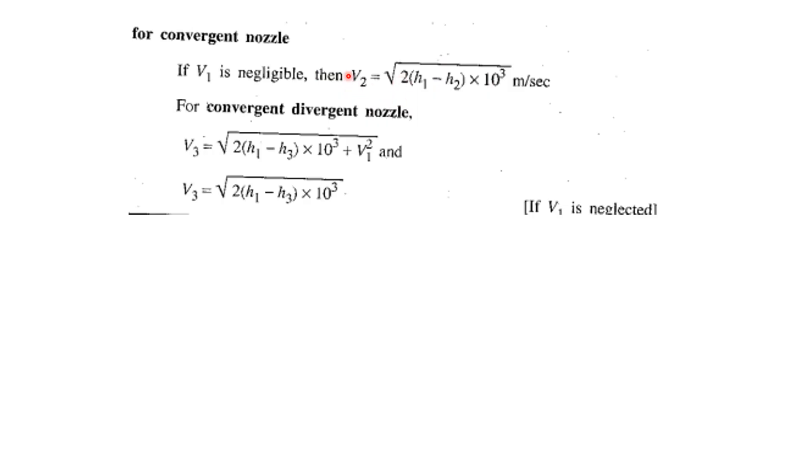For convergent divergent nozzle, we have three sections. Section three is the exit of the nozzle, so the velocity of steam at the exit will be V₃ = √(2(h₁ - h₃) × 10³ + V₁²). If V₁ is negligible then we avoid that term.